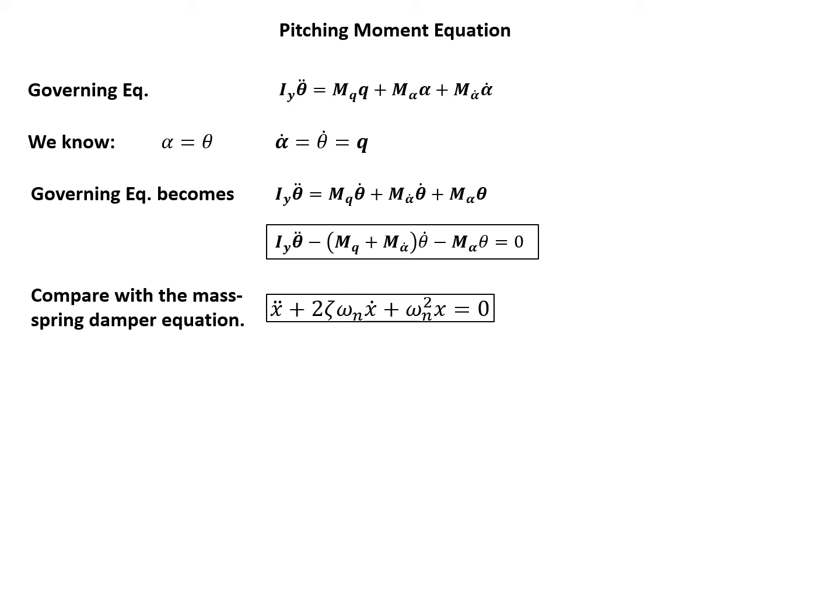We can already know omega n, that's the natural frequency, and the damping ratio. So the square of natural frequency is minus M alpha divided by I y, and twice zeta omega n equals the right-hand side, I'm not reading that. So if we reorganize, we can have omega n and zeta.